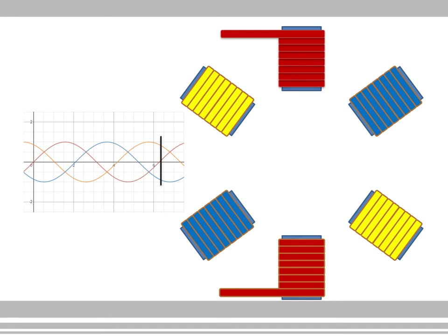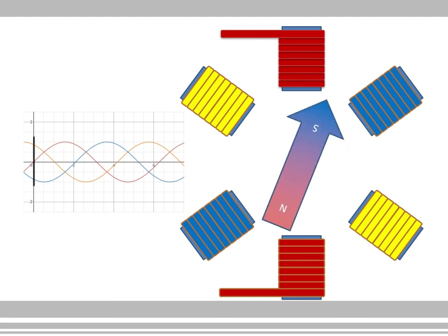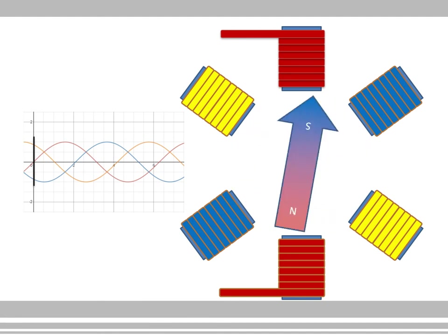That didn't look like a rotating field — it looked like three fields switching on and off in sequence, which is exactly what it is. If we speed up that sequence it begins to look more and more like a continuous rotating field. At 50 or 60 Hz the field rotates so fast that it actually appears to be a rotating field, even though in reality each individual field is just switching on, off, and reversing direction in sequence — and the net result is what appears to be a rotating magnetic field.